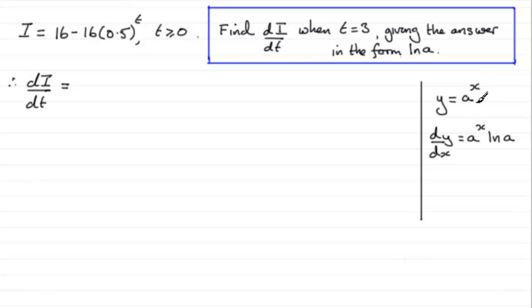Okay, well, on that basis, I know that this is not with respect to x, but with respect to t. So our constant a is the 0.5, and the t, well, that equates to the variable x. So when it comes to differentiating this term,